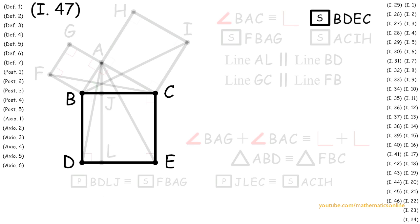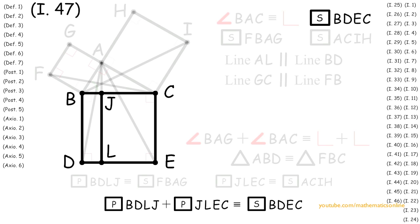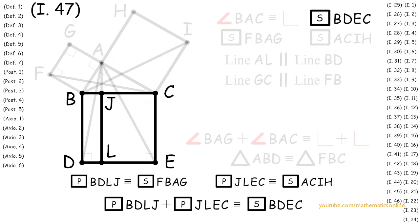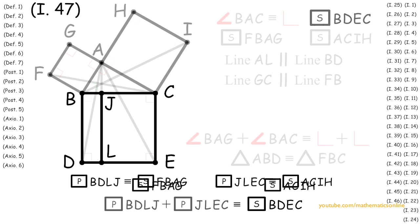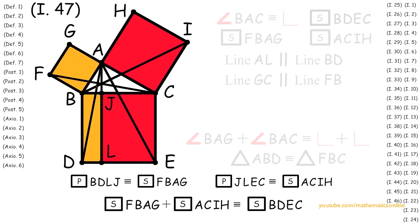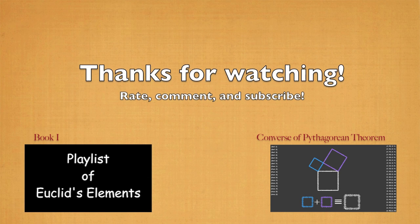Finally, looking at square BDEC, we can see that it is congruent to parallelogram DBLJ plus parallelogram JLEC. Now since parallelogram BDLJ is congruent to square FBAG and parallelogram JLEC is congruent to square ACIH, it follows that square FBAG plus square ACIH is congruent to square BDEC. Therefore, we have proven that with any right triangle, the square opposite the right angle is always congruent to the sum of the other two squares. This is Euclid's proof of the Pythagorean Theorem. For a complete look at all the propositions used in this proof, click on the left annotation for a playlist on Book 1 of Euclid's Elements.